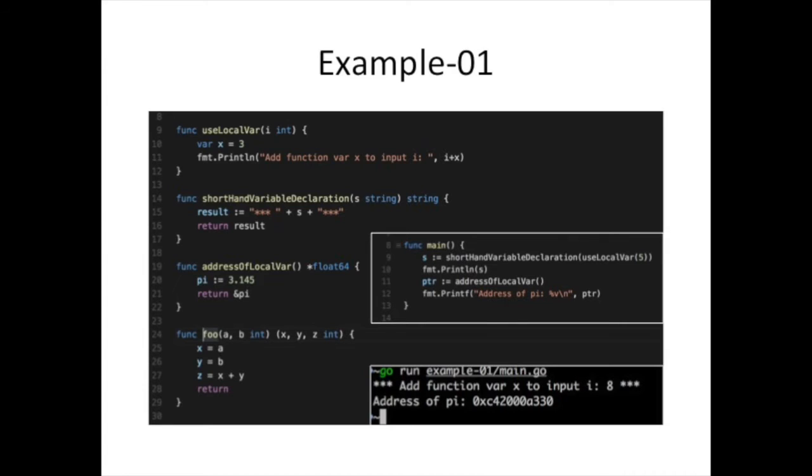The next one, function on line 14, accepts a string and returns a string. What it does is it wraps the string that it gets with some stars. You can think of it as pretty printing or printing some log information or something to grab your attention. The third one, line 19, doesn't accept anything. It creates a local variable pi. There's another way you can create a variable without specifying the type. You drop the var keyword and just say variable name colon equals. That's the same as if you said var pi equals. So you say var pi equals 3.145 or you can say pi colon equals. And it returns the address of pi. Finally, I have a function that accepts two parameters but returns three. They don't need to be exact, one for one or anything like that in terms of number of parameters provided and the number of parameters returned.